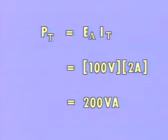Previously we calculated the total power in any circuit by multiplying the applied voltage times the total current. The same is true in a resistive reactive circuit. In our example, the total power equals 100 volts times 2 amperes, or 200 volt amperes.